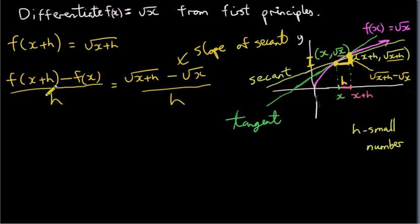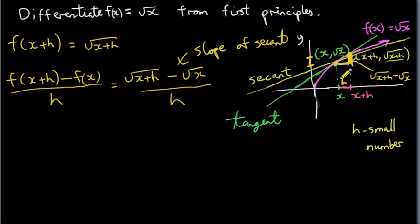Now, the next step is to let h go to zero. If we make h very, very small, the second point will move down to coincide with the first point, and our secant — our yellow line — will coincide with our tangent. Imagine this point here moving down the curve of f of x equals root x towards this point here. So the secant becomes a tangent, or in other words, the slope of the secant will become the slope of the tangent. By letting this point move down, it's equivalent to letting h go to zero. So we take a limit as h goes to zero.